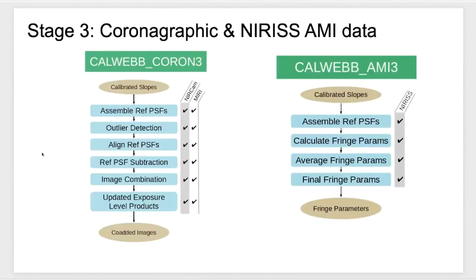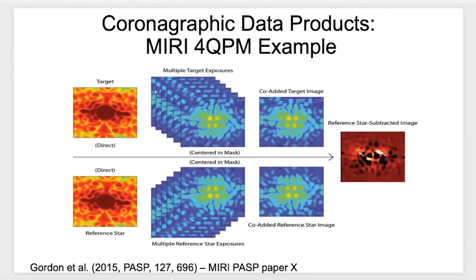Here's an example showing what IFU data looks like coming out of the CalWebb spec2 and spec3 stages. A couple of other modes worth mentioning: we have coronography data where stage one and stage two look the same, and also NIRISS AMI — the aperture masking interferometry mode of NIRISS. The differences are in stage three, where coronography lets you take a stack of coronagraphic exposures and assemble them differently from imaging mosaics. You end up with a co-added target image and a co-added reference star image, and the coronagraphy pipeline subtracts that reference star from the target, revealing residuals — for example, a planet you're trying to detect.